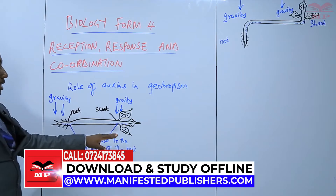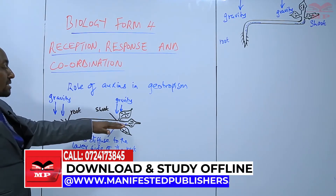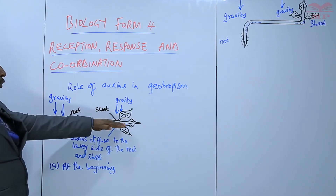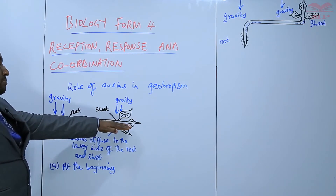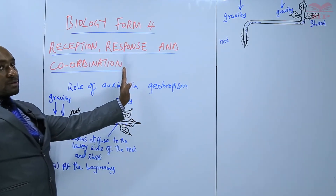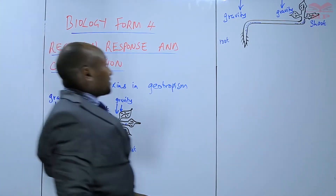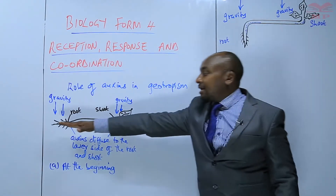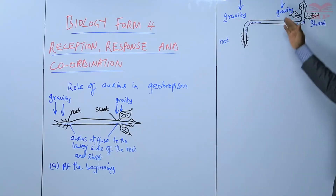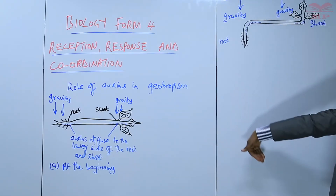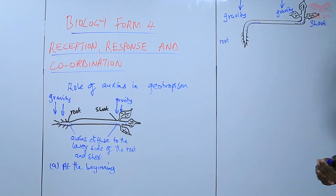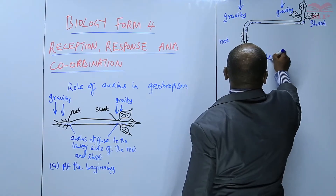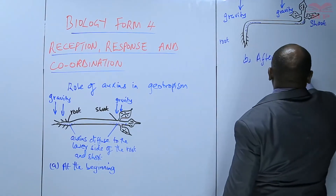In the case of the shoot, high concentration of auxins makes growth faster — so it is the opposite of the root. High concentration of auxins makes the shoot grow faster on the lower side, and therefore it bends upwards. That is why, after a few days, the root bends downwards and the shoot bends upwards.